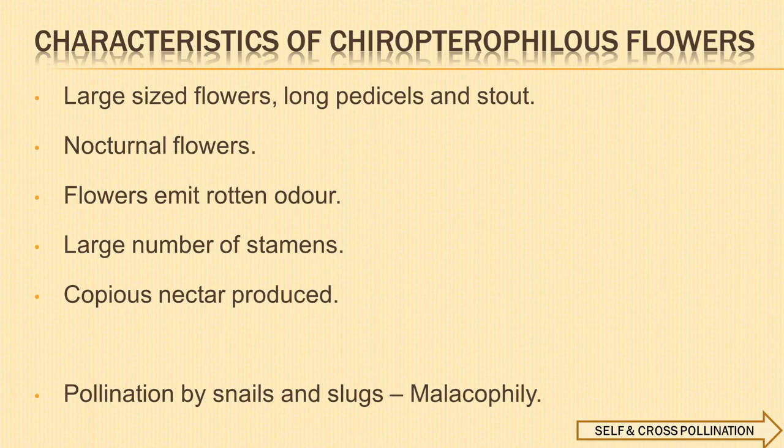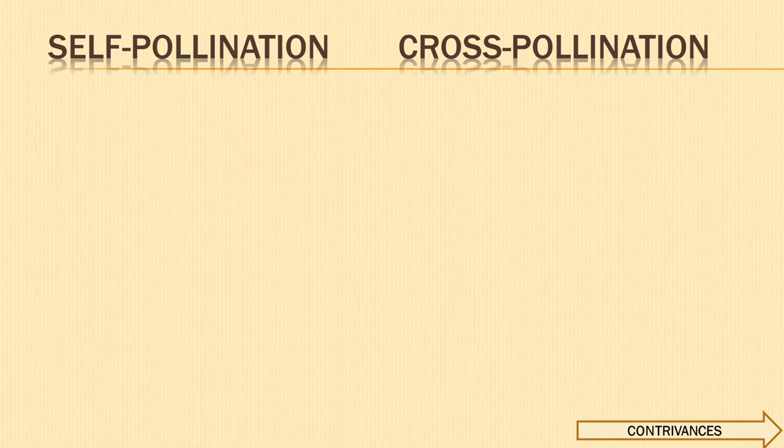In malacophily, pollination is brought about by snails and slugs. Land plants such as chrysanthemum and aquatic plants like Lemna minor show malacophily. Having discussed self-pollination and cross-pollination in detail, let us now make a comparison between self-pollination and cross-pollination.